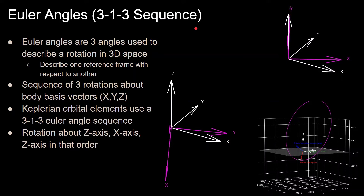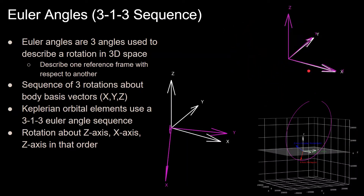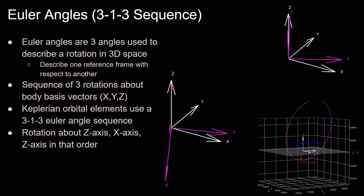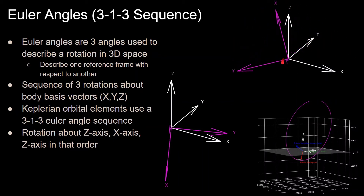The most popular Euler angle sequences are the 3-2-1 and the 3-1-3. We're using the 3-1-3 here, which means the sequence starts with a rotation about the body z-axis, then a rotation about the body x-axis, and then another rotation about the body z-axis. Each of these rotations corresponds to a Keplerian orbital element. This is illustrated with the animation in the top right, where the goal is to describe a purple reference frame with respect to a white reference frame via three rotations in the 3-1-3 sequence: first a rotation about the z-axis, then about the x-axis, then again about the z-axis.